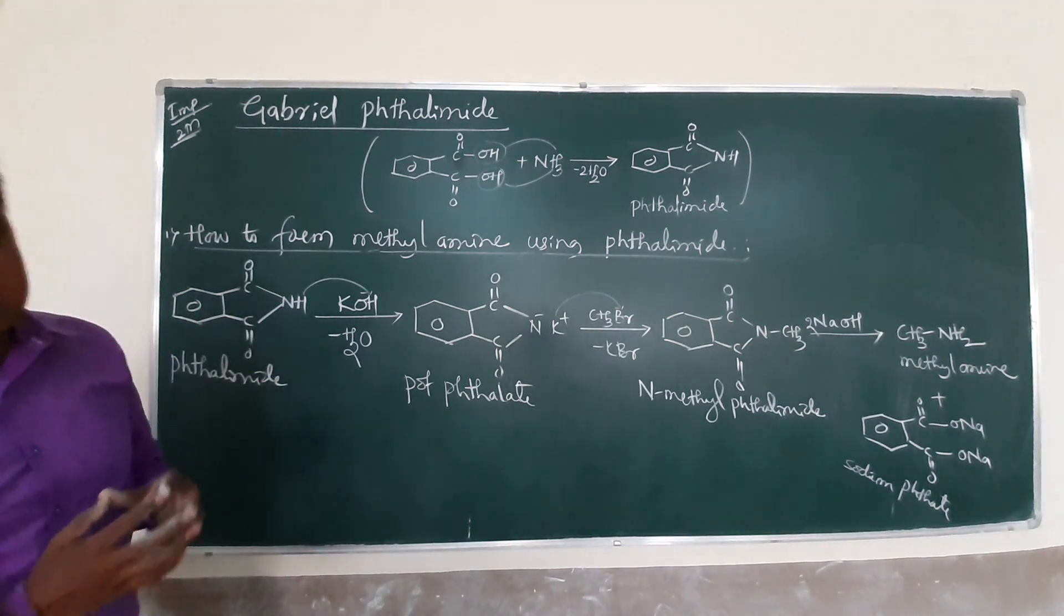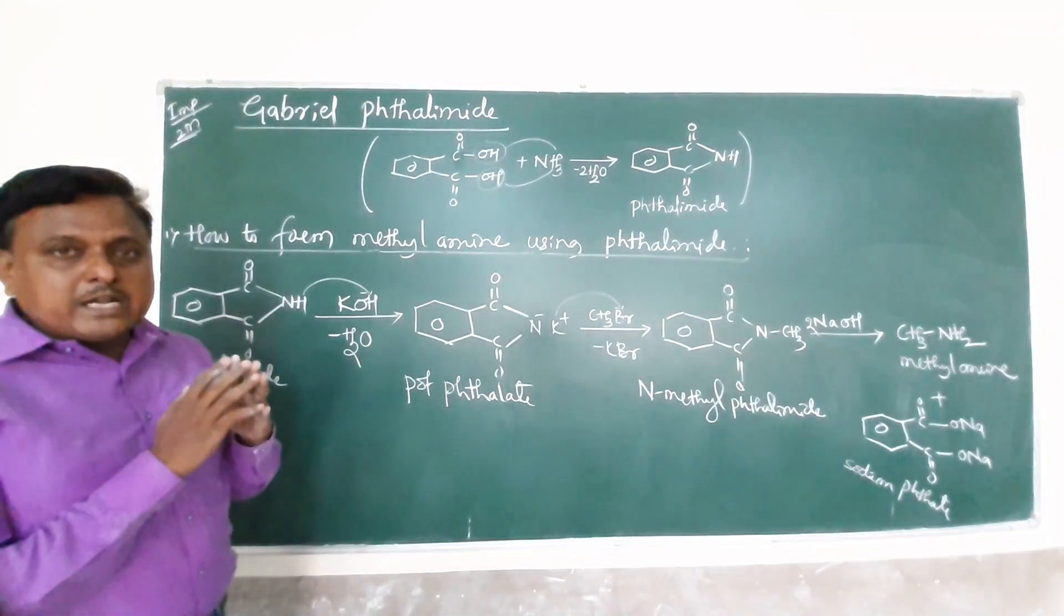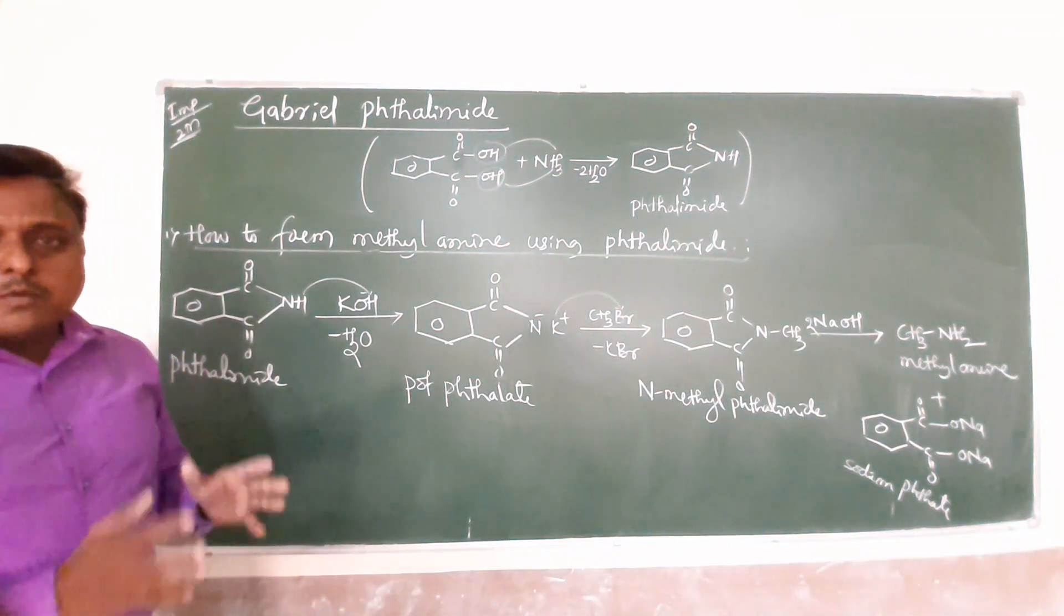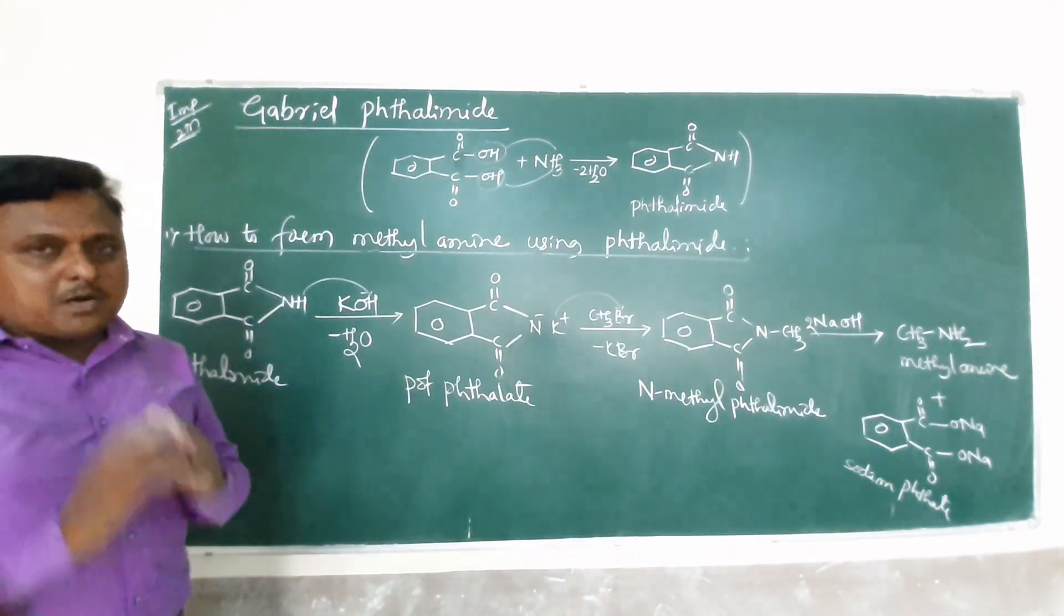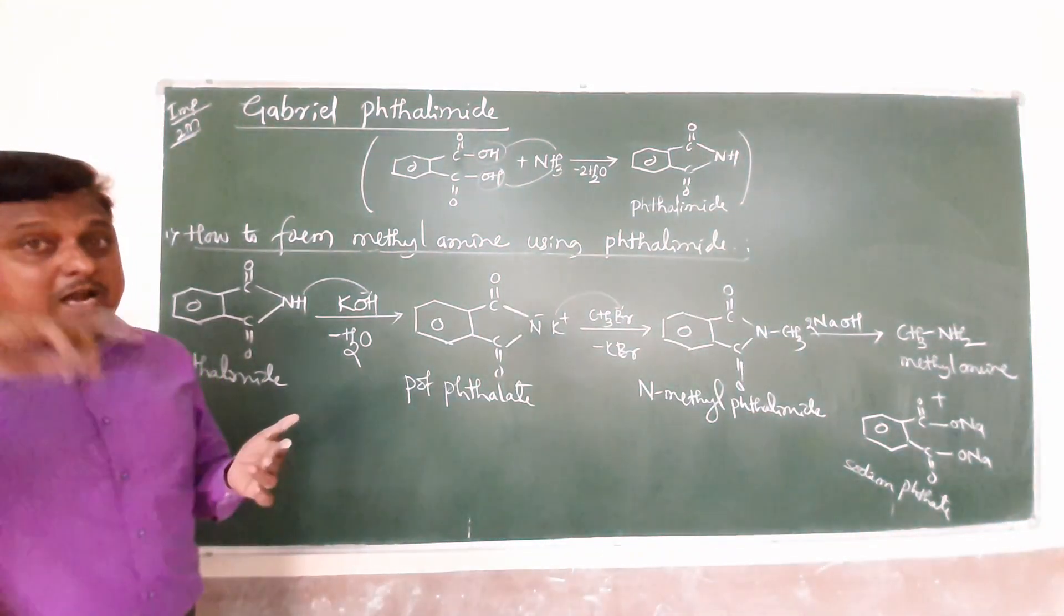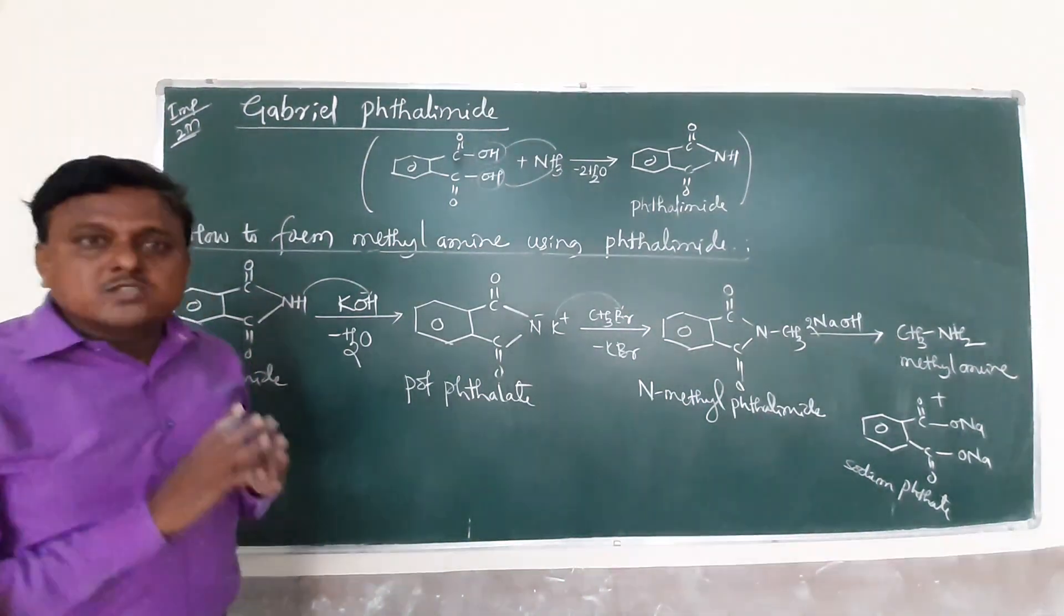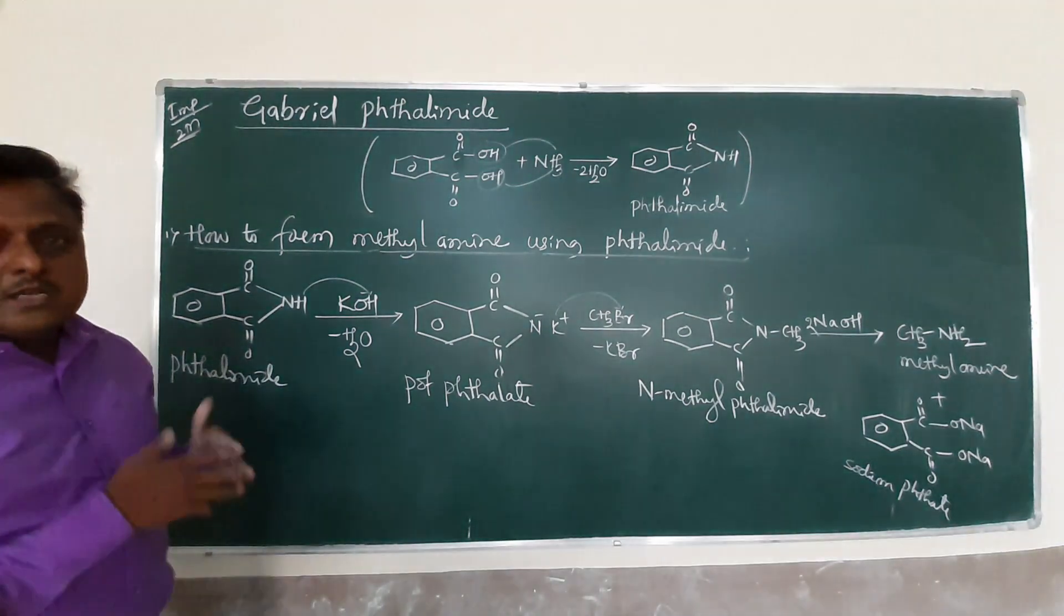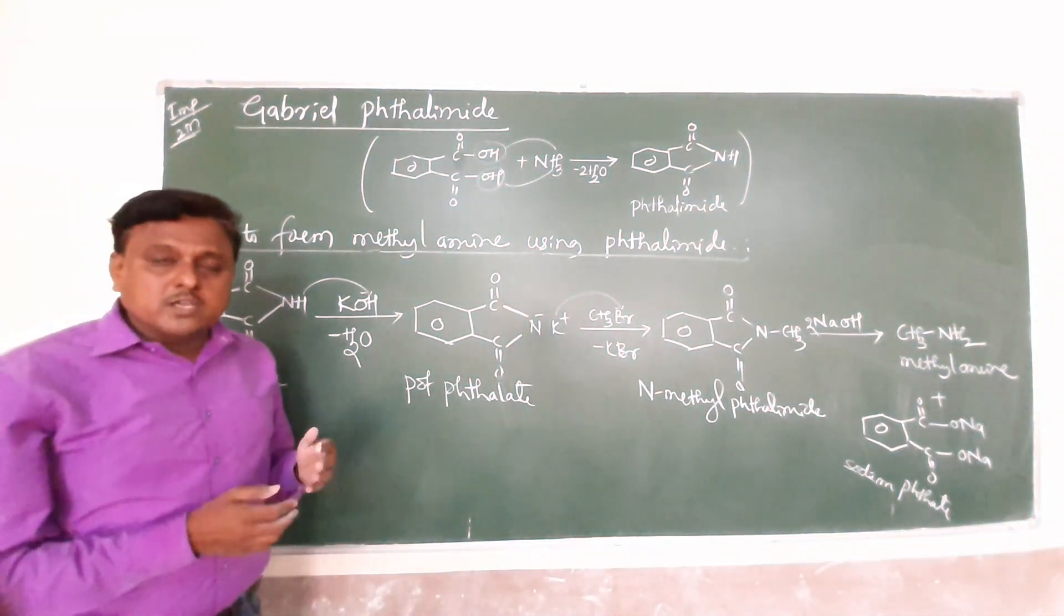For our method, industrially suitable, we have Hoffman bromamide degradation reaction. Hoffman bromamide helps to prepare both aliphatic and aromatic amines. You can try it with acetamide and benzamide in Hoffman. So practice, keep practicing for Hoffman and Gabriel. And then in the next video we start physical and chemical properties. Thank you, thank you so much.